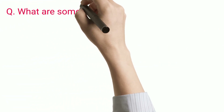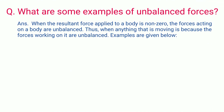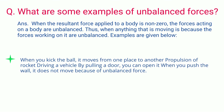Q: What are some examples of unbalanced forces? A: When the resultant force applied to a body is non-zero, the forces acting on it are unbalanced. Thus, anything that is moving has unbalanced forces working on it. Examples include: kicking a ball so it moves from place to place, propulsion of a rocket, driving a vehicle, pulling a door open — but pushing a wall does not move it because the forces are unbalanced yet the wall provides equal resistance.